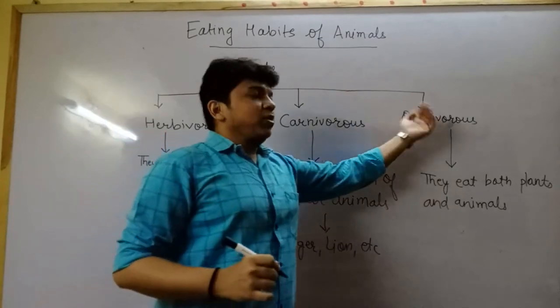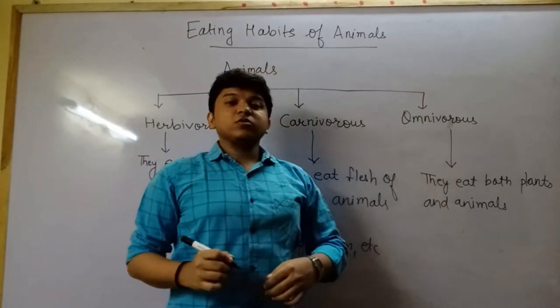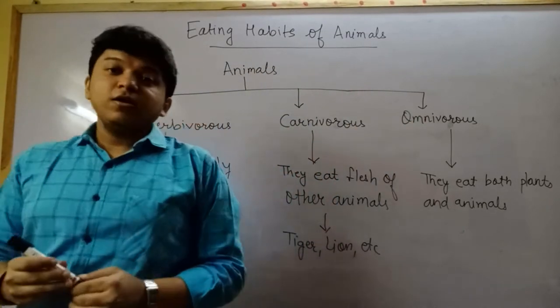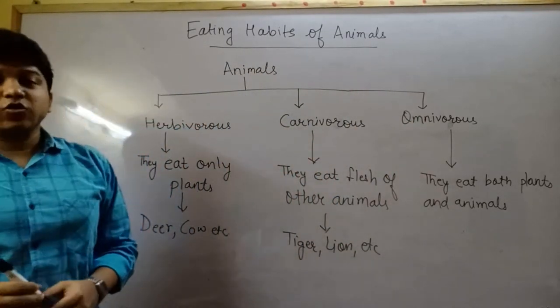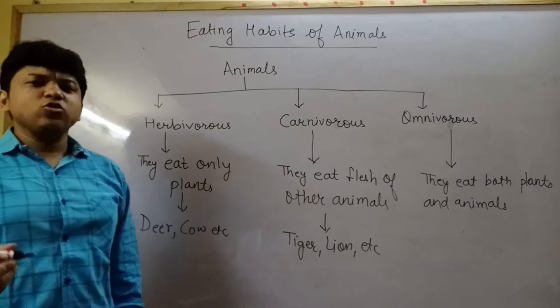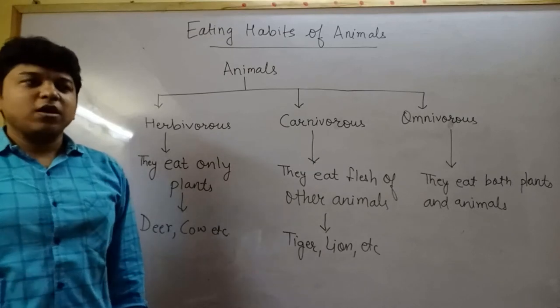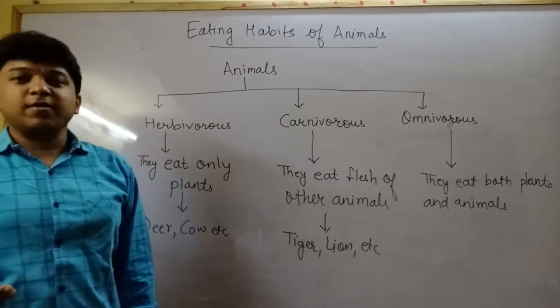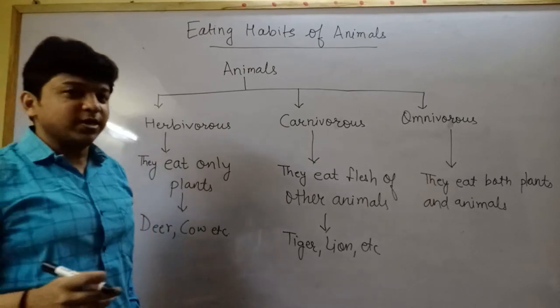Now, omnivorous animals eat both plants and flesh of other animals. Human beings are examples of omnivorous animals.